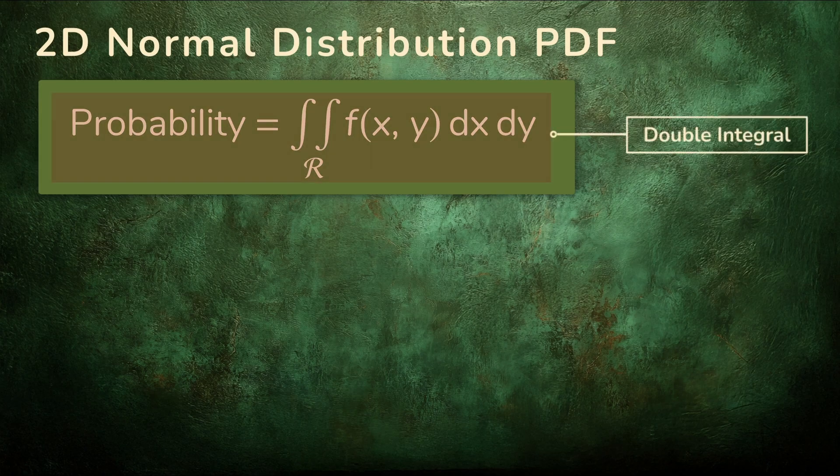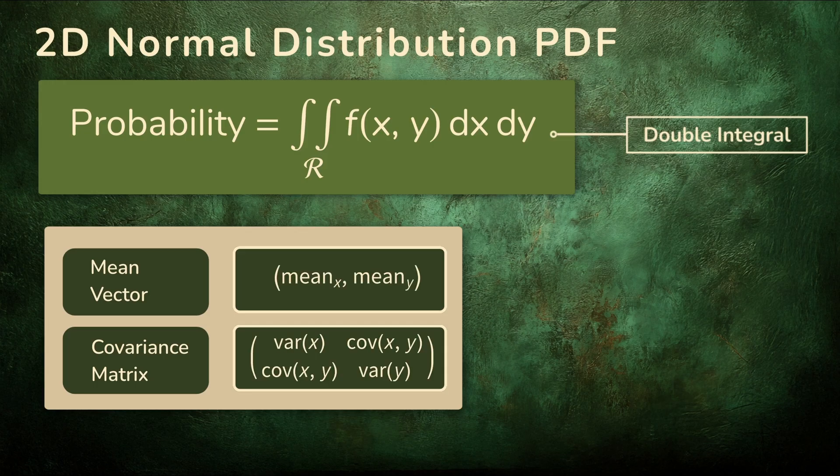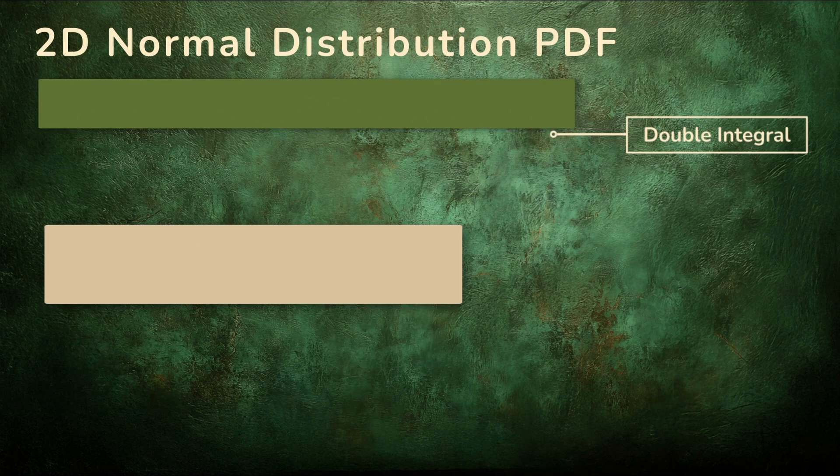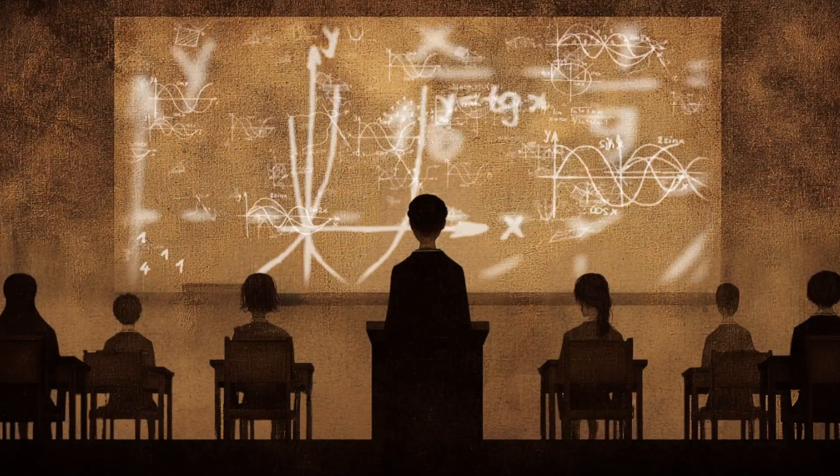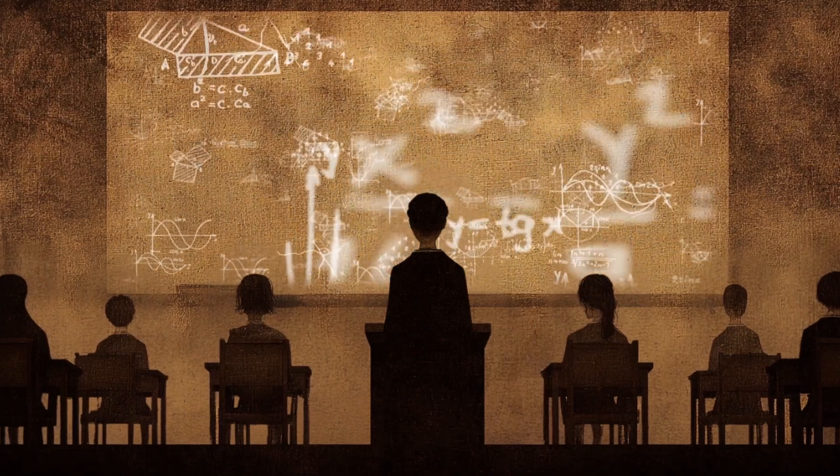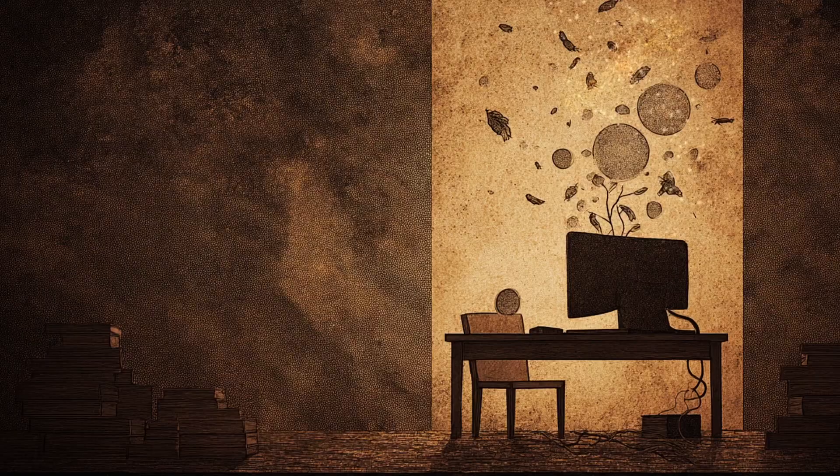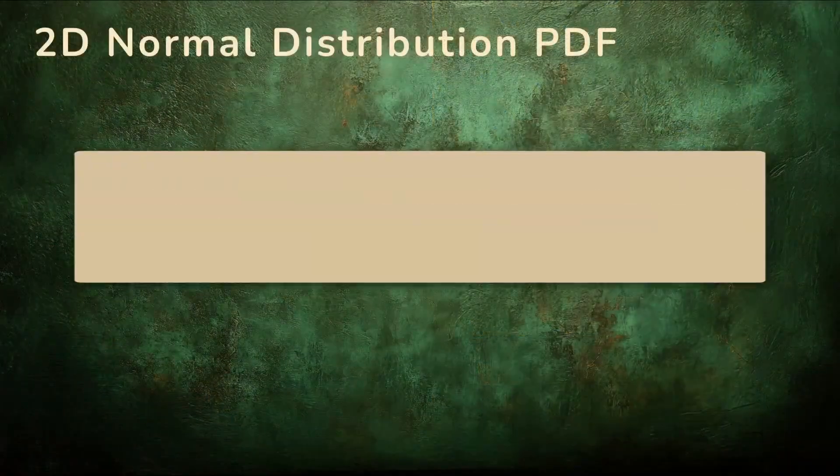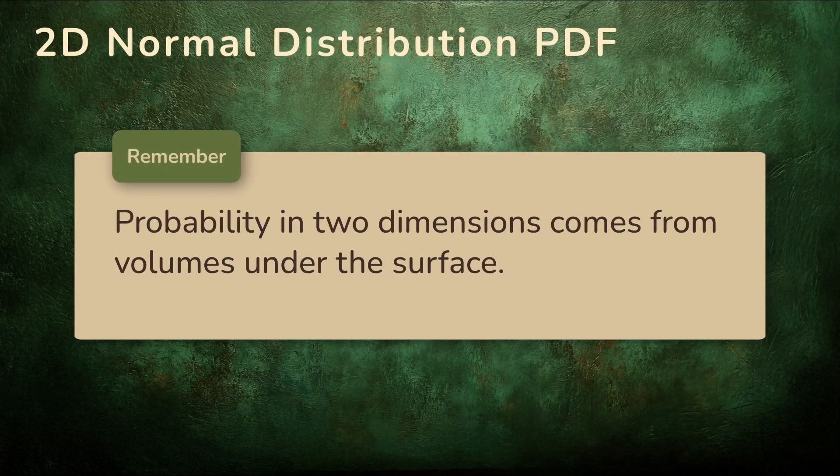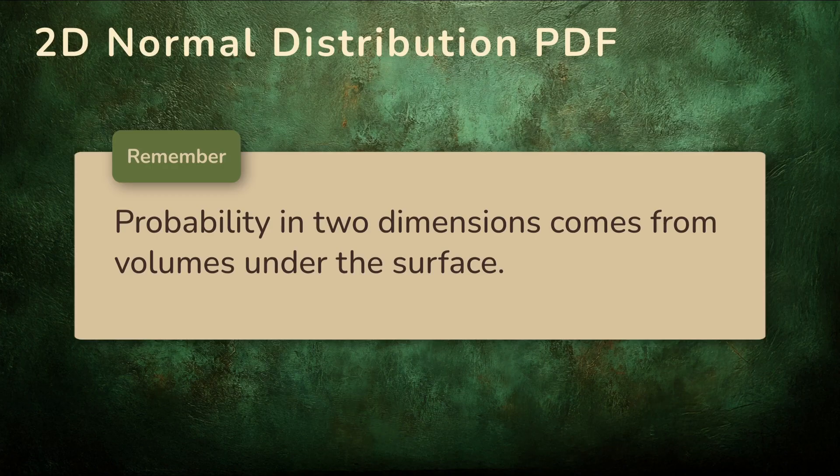The formula for the PDF of the 2D normal distribution is a concise way of packaging the five parameters. The mean vector and the covariance matrix, the five numbers we discussed earlier, determine the entire surface. The details of evaluating double integrals are usually covered in a calculus course. In practice, the computation is handled by software. What matters is understanding the idea that the probability in two dimensions comes from volumes under the surface, not just areas under a curve.